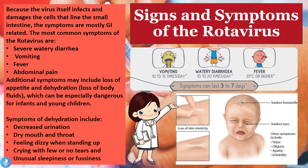The most important thing to prevent in rotavirus infection is the onset of dehydration. Kids need to stay well rested and well hydrated. Signs of dehydration include decreased urination, dry mouth and throat, feeling dizzy when standing up, crying with few or no tears, and unusual sleepiness or fussiness. Vomiting occurs about 10 to 15 times a day, watery diarrhea 10 to 20 times a day, and fever reaches about 39 degrees Celsius or higher. These symptoms usually last three to seven days.